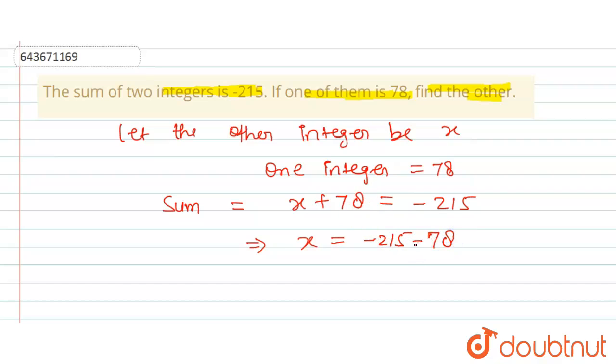You can see that these are two negative signs with numbers, so that means addition will take place but with a negative sign. 215 plus 78 equals 293, with a negative sign.